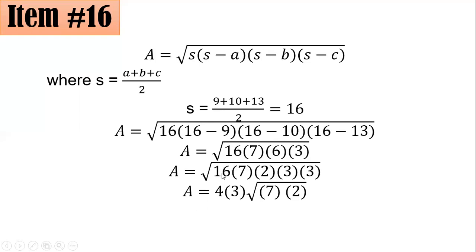I took the square root of 16. Remember that 16 is a perfect square, so its square root is 4. It should go outside. 3 times 3 here, it's 9. The square root of 9 is 3. 7 and 2 are not perfect squares, and they don't have any perfect square factor except 1. So they should remain as your radicand. And 4 times 3 here is 12. And 7 times 2 here is 14. Hence, the answer here is letter A, 12 square root of 14 square units. I hope you got it.